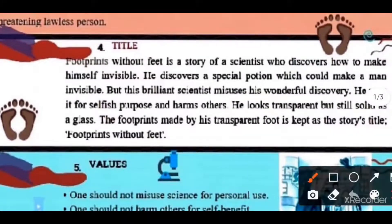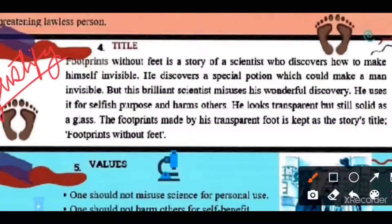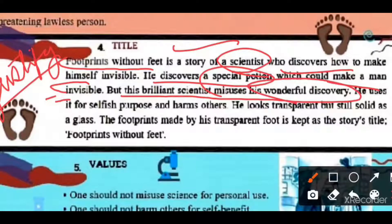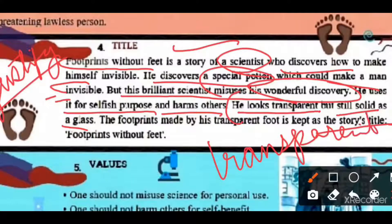Now let us look at the very interesting title given to this story. How do we justify the title? This question definitely comes up — 'how do you justify the title: An Invisible Man or Footprints Without Feet?' This story is about a scientist who becomes invisible. He discovers a potion that makes him invisible, and he misuses this beautiful discovery for selfish purposes, harming people. He remains transparent but solid — like glass. The story gets this title because there are footprints, but the foot is transparent. Since the person himself is transparent or invisible, obviously his foot will appear, but the person will not be seen. So the title is completely justified.